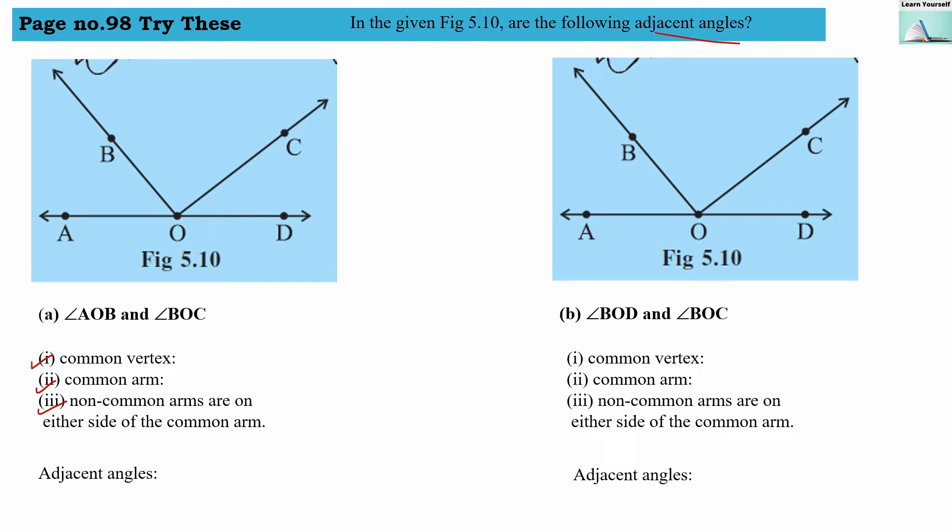Angle AOB - we are talking about this angle, and angle BOC is our second angle. Let us check the first condition: common vertex. Yes, they do have a common vertex, and that is O. Second condition: common arm. OB is the common arm between these two angles.